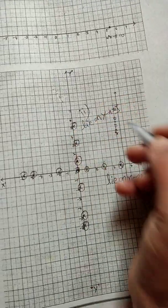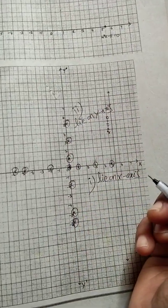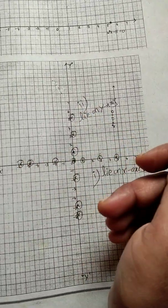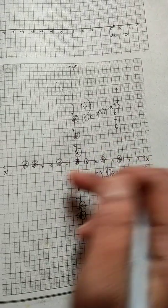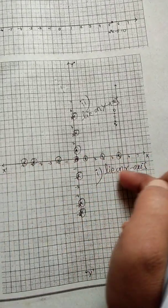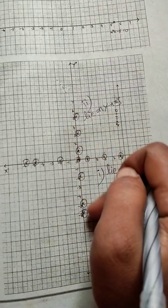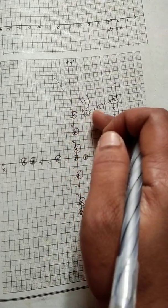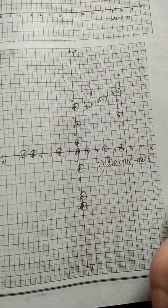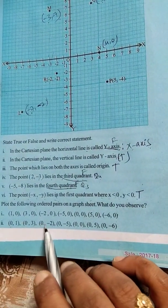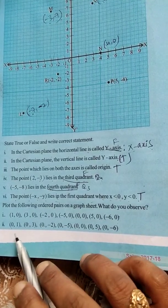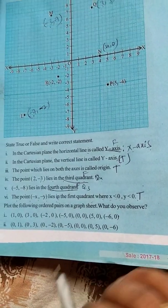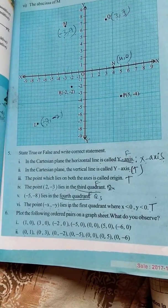After plotting the graph for the given coordinates, we observed that the first set of points all lie on the x-axis, and the second set of points all lie on the y-axis. This is our observation. By seeing only, we can say all x-coordinates are 0, so those points lie on the y-axis. I hope you understood, thank you.